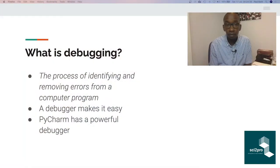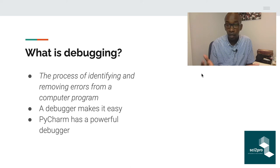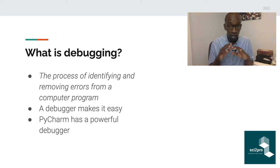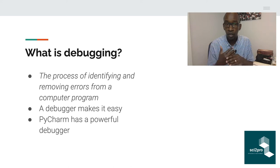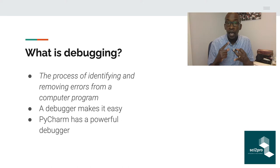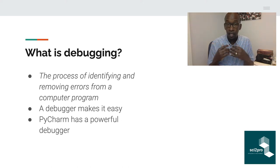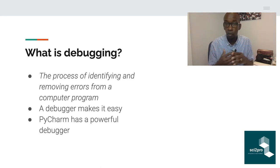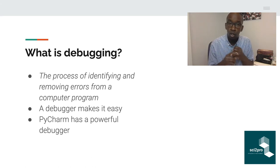Let's start with a definition of debugging. Debugging is a process of identifying and removing errors from your code. You're never going to write perfect code — your code will always have some parts which don't function correctly. Debugging is the process of understanding why those parts don't work correctly and figuring out how to fix them. Especially as programs get larger, it becomes easy to introduce errors that are very hard to track.